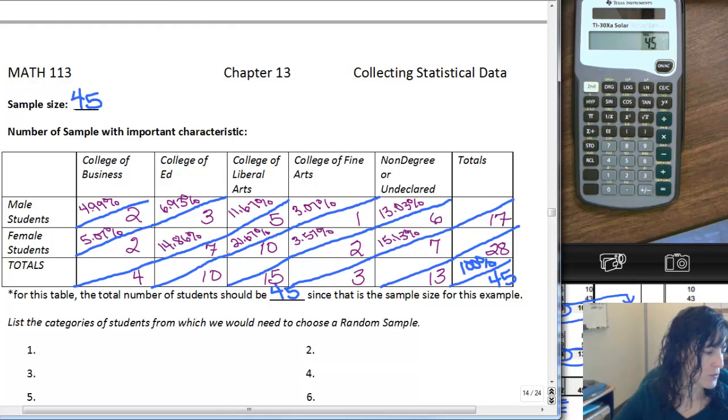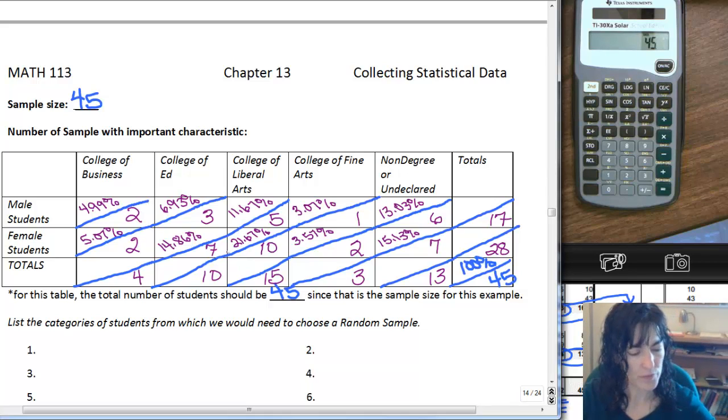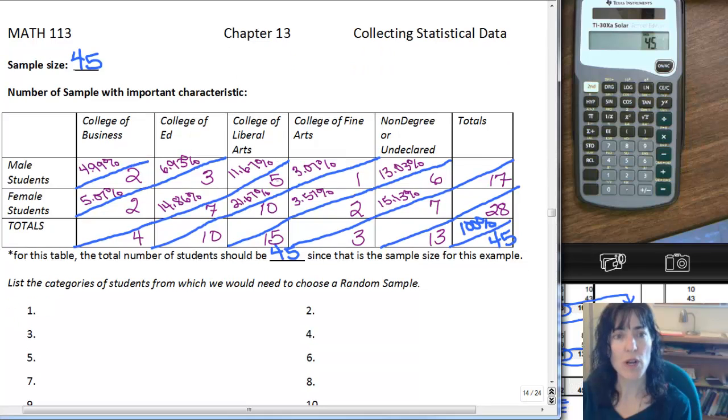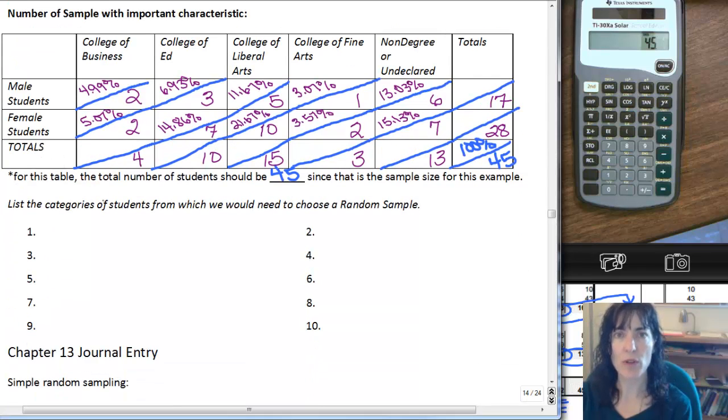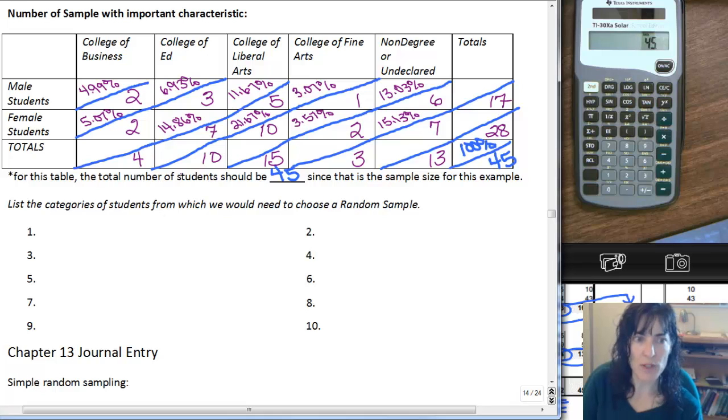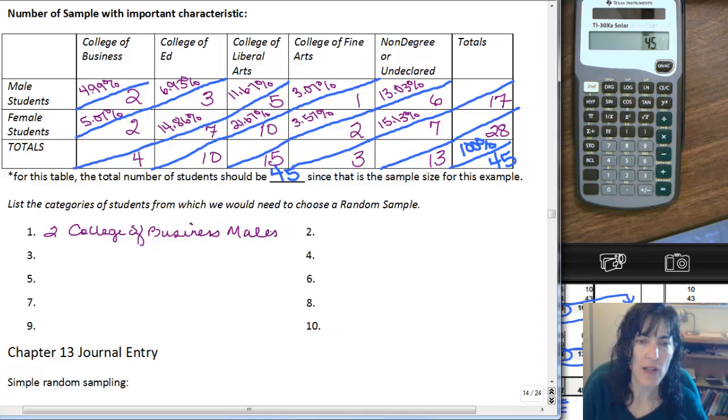Now, the last thing is to list out the categories of students for random sampling. I'll also write the number of people in each sample. The categories are, for example, College of Business males - I need two of them. So two College of Business males and two College of Business females.